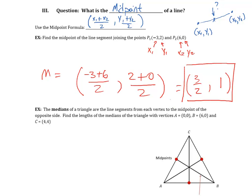The last example in this section involves medians of a triangle. A median connects a vertex to the midpoint of the opposite side. We need to find the lengths of the medians of the triangle with vertices A = (0, 0), B = (6, 0), and C = (4, 4). Let's start by plotting this triangle.